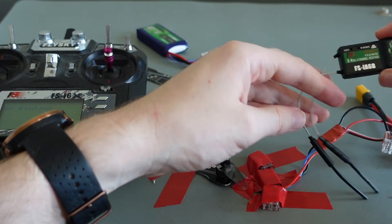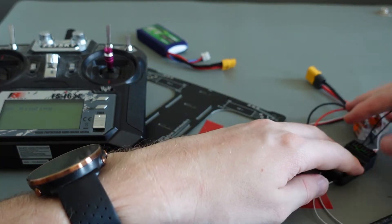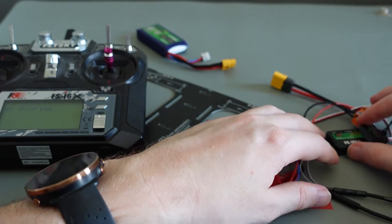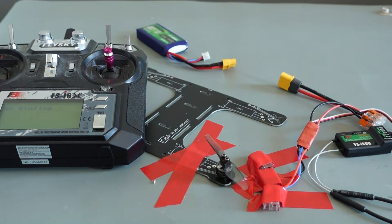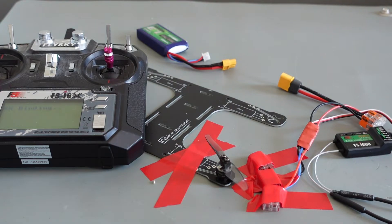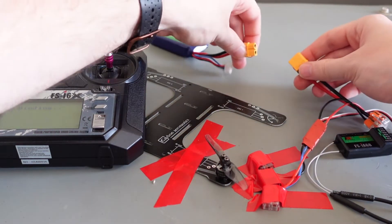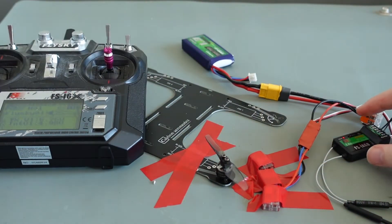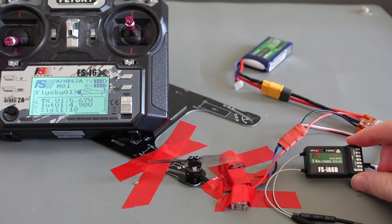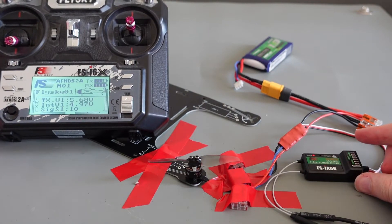Make sure the left stick is in its lowest position to avoid a sudden start of the motor. Connect the battery with the XT60 connector to power both the motor and receiver. You will hear one beep from the radio transmitter indicating that it's coupled to the receiver. The three next beeps come from the ESC and indicate that the motor is ready to start.